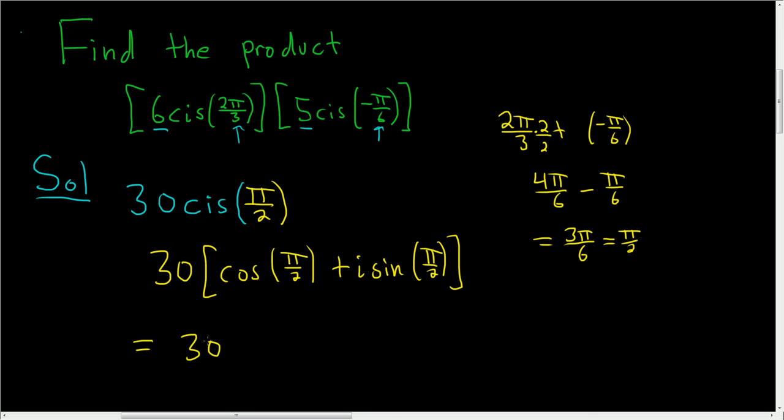So this is 30. The cosine of π over 2 is 0, and the sine of π over 2 is 1. So this is 30 times i, so simply 30i, and that's it.